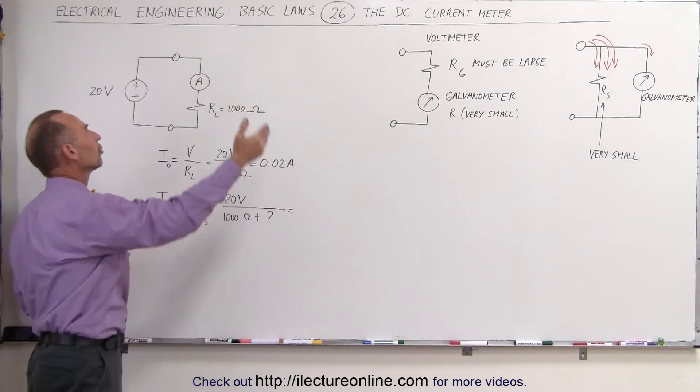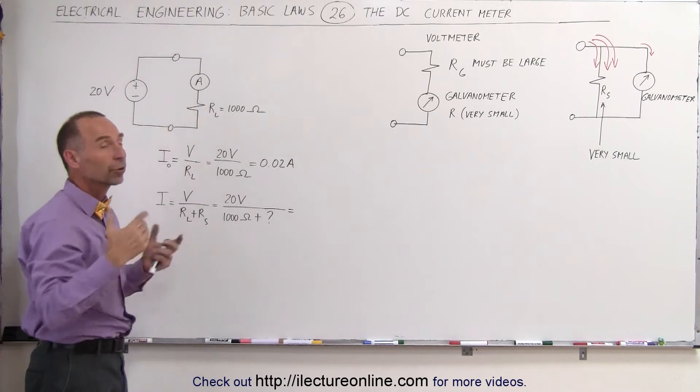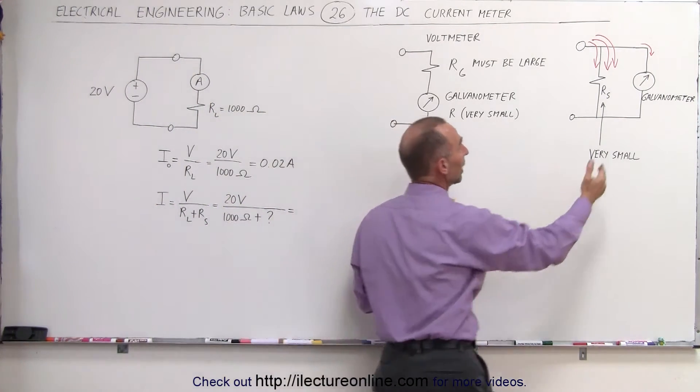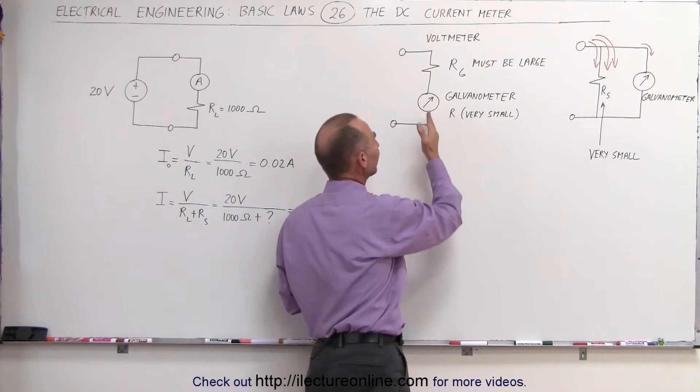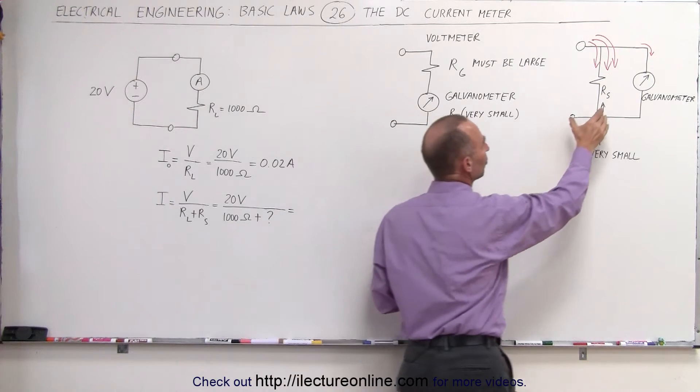What happens when you now insert the current meter? Well, the current meter is kind of like a voltmeter. It's made out of a galvanometer, just the same as before, but instead of having the resistor in series, you now have the resistor in parallel.